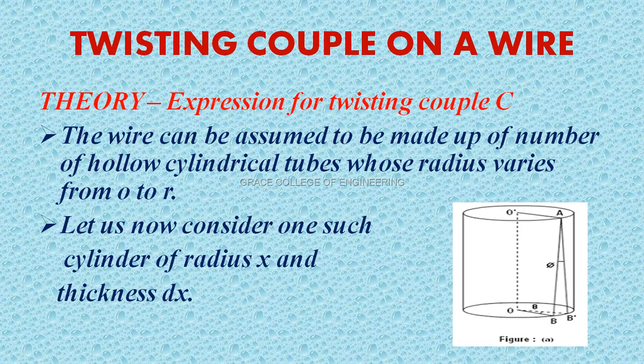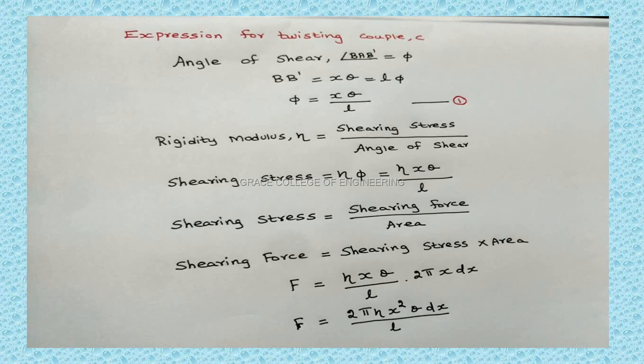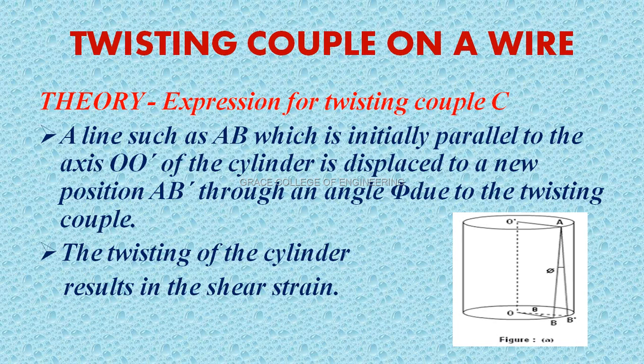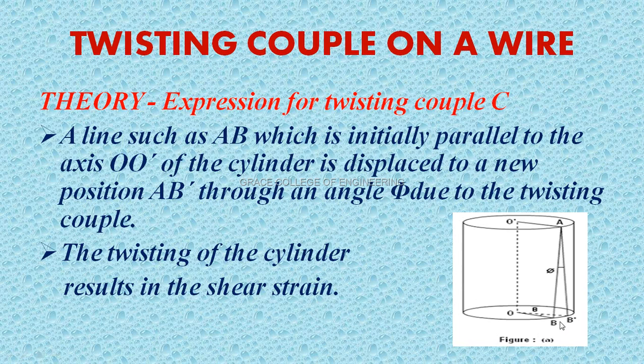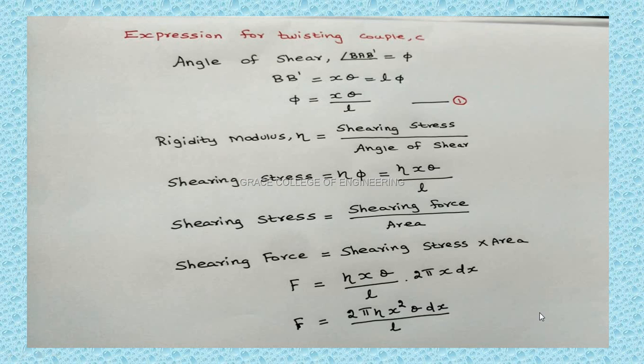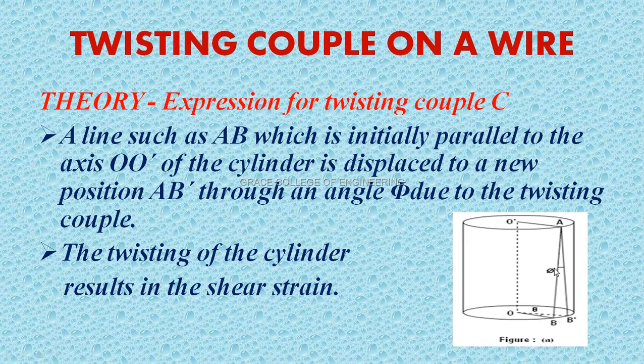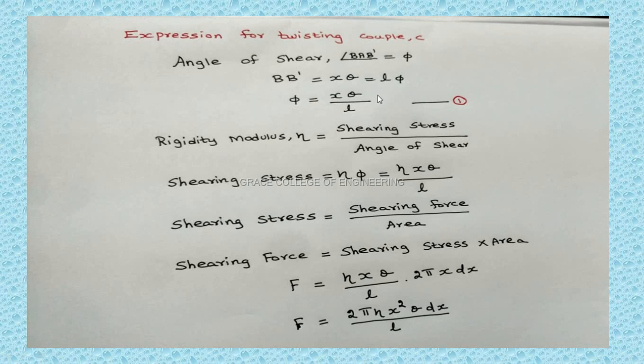Now consider the radius R. The distance is x and the angle is theta, so we can take BB' as x theta. With respect to this angle, the arc angle, this length L gives us BB' equals x theta equals L phi. Now we equate: x theta equals L phi. From this, phi equals x theta by L. Take this as equation number 1.